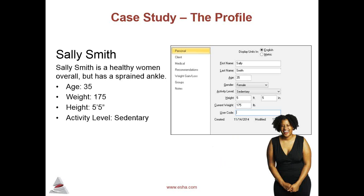For this demonstration, Sally Smith is our fictitious client. From the client's referral information that we received, we know that Sally is a healthy woman overall, but has a sprained ankle, so her physical activity is limited. The referral information provides Sally's age, current weight, height, and activity level. The first step is to enter this information into the Food Processor.